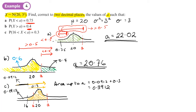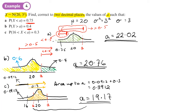Now I can go back and work out what A is. Option or Menu 7, Inverse Normal, number 3. My area is what I just worked out — I can use the answer button or type in 0.3912. Standard deviation 3, mean 20. That gives me a value of A as 19.17. So A equals 19.17. I had to go backwards and forwards between different modes because I needed the area up to a point from the left. The value of A here is less than 20, so it was over that side — but we wouldn't have known until we worked out the final answer.